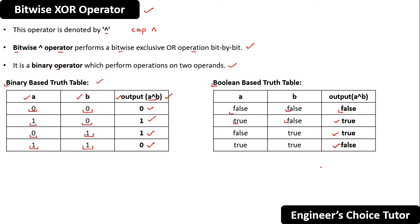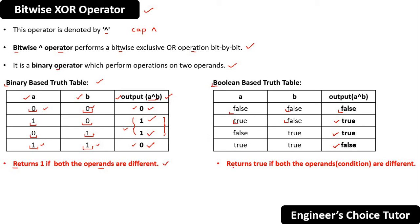By observing these truth tables, the first conclusion is: it returns 1 if both operands are different. See the cases where both operands are different — output is 1. Where both operands are the same (0,0 or 1,1) — output is 0. Similarly for the boolean truth table: returns true if both operands or conditions are different, such as true/false or false/true, not when both are the same.